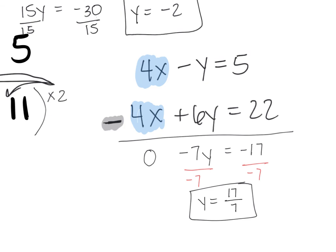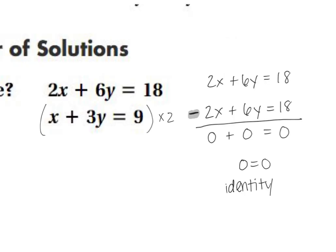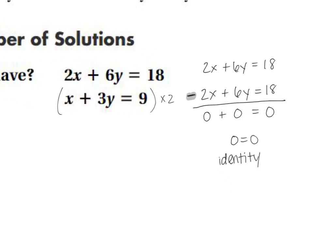When we get an identity — the same equation on both sides — we have infinitely many solutions. If we multiplied one equation and got the exact same equation as the other, when we'd graph it it would be the same line. Same line means infinitely many solutions.